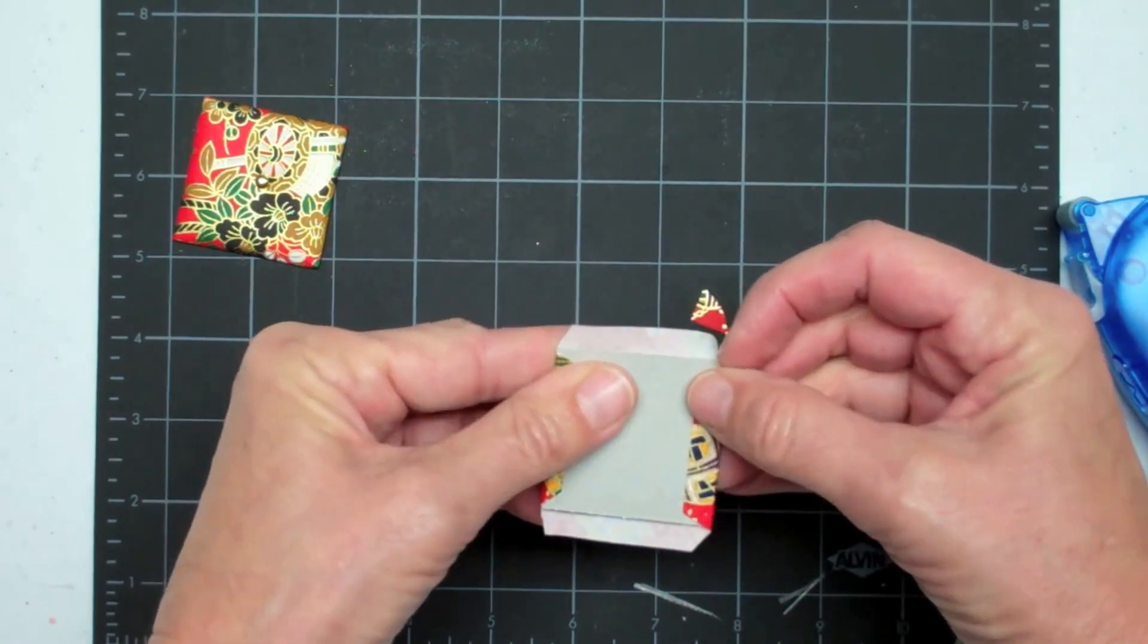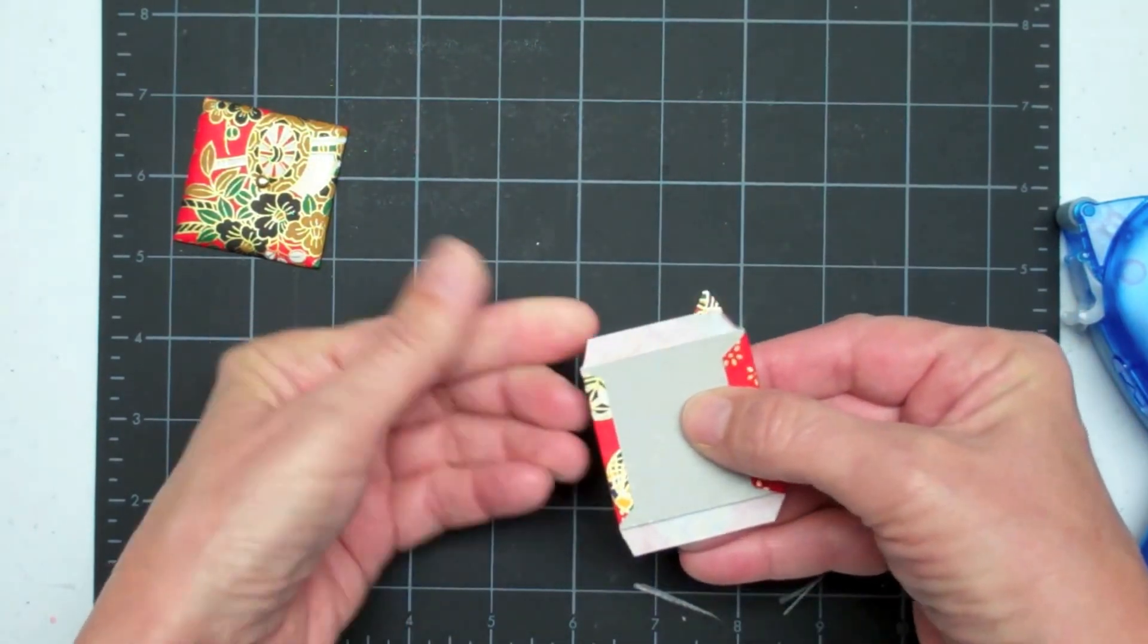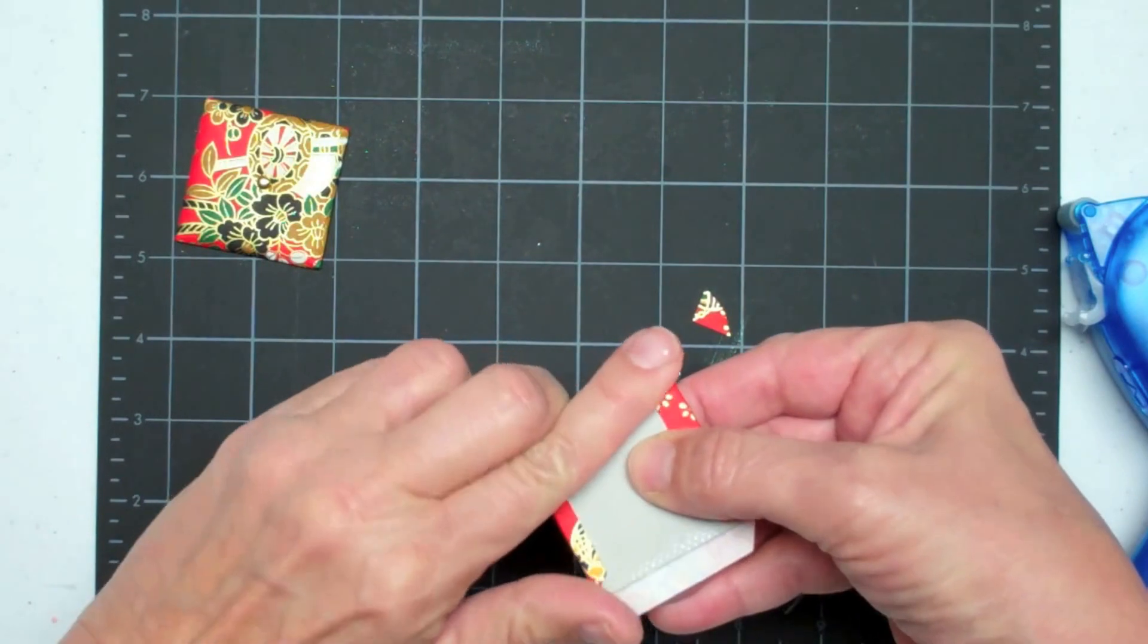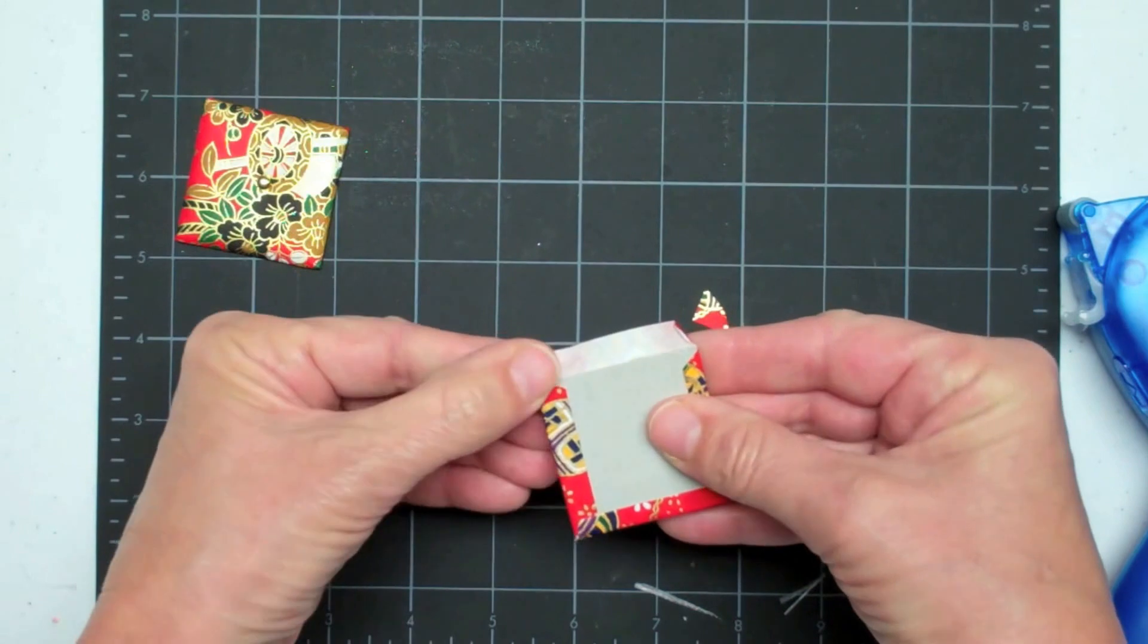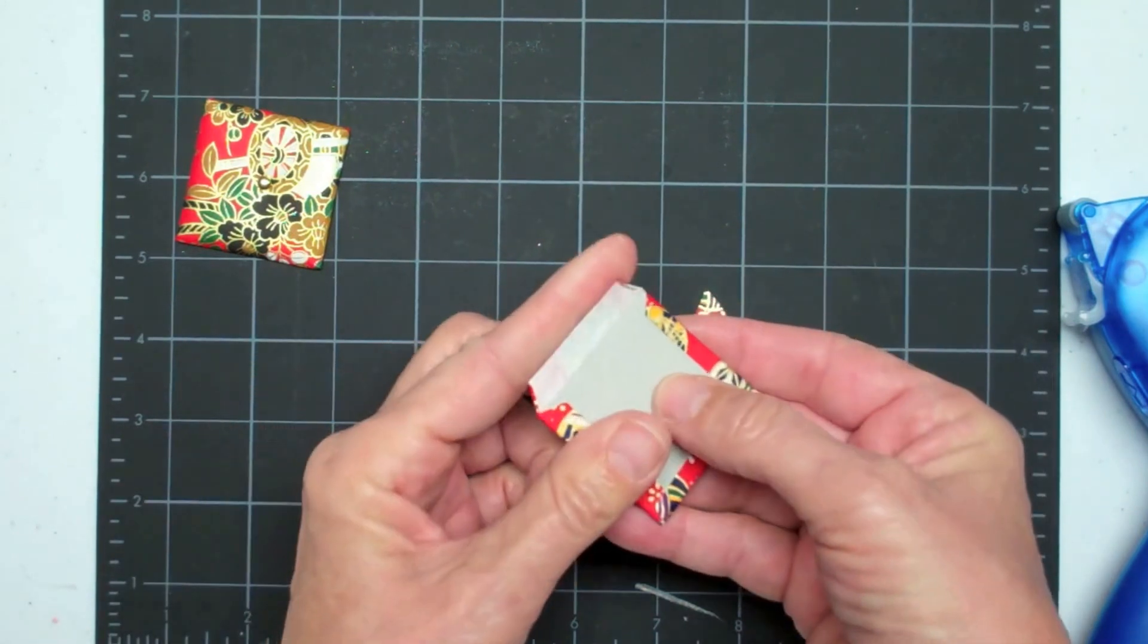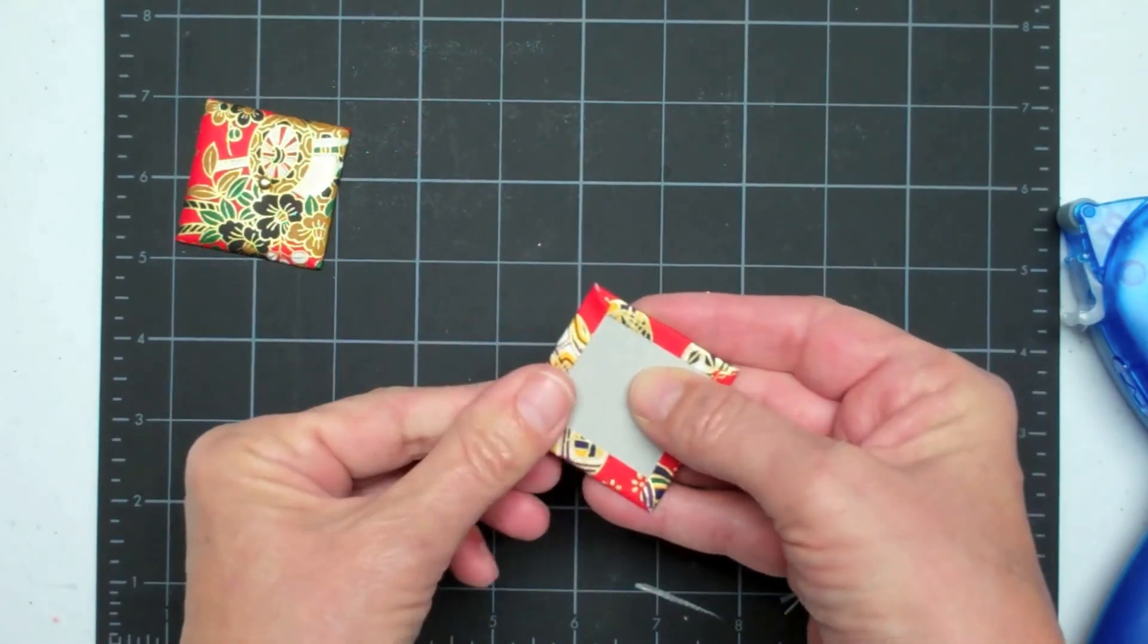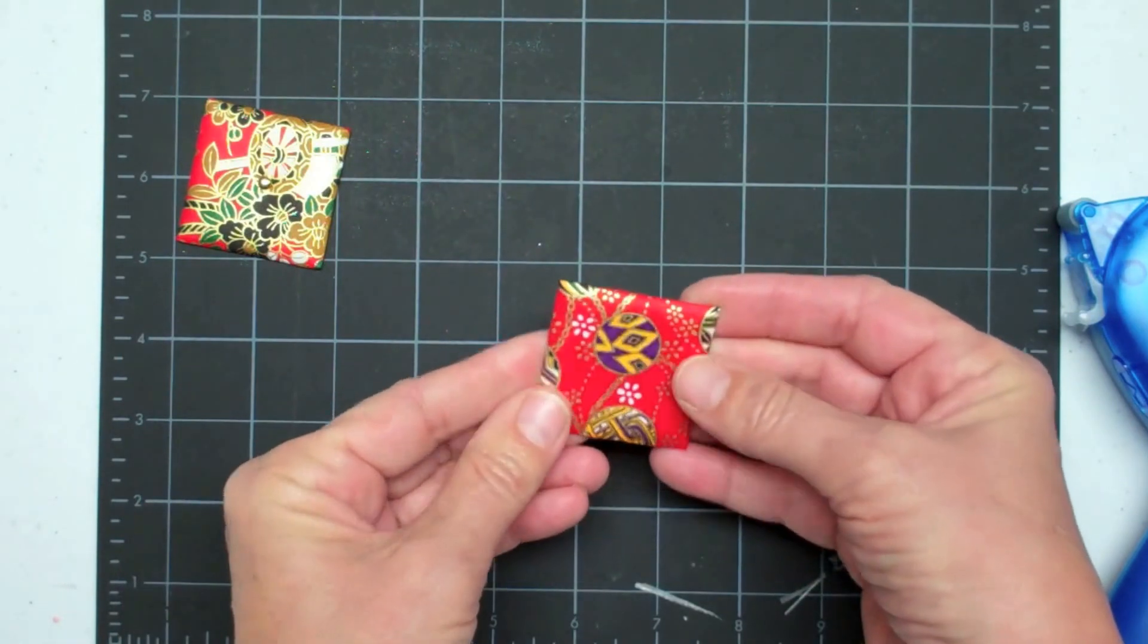Just gently do a little pinch on either side and then bring them around so you can see these really nice corners. The good part about this adhesive is it's dry, it doesn't take any drying time, it dries instantly. So now I've got this neat little padded pillow.